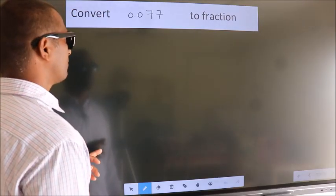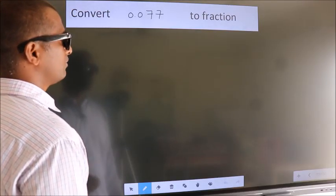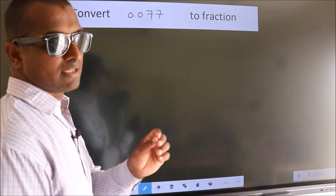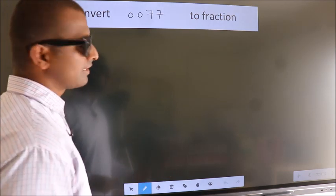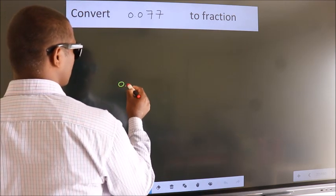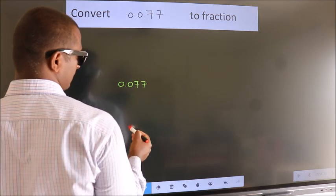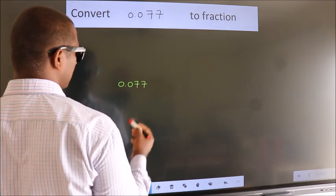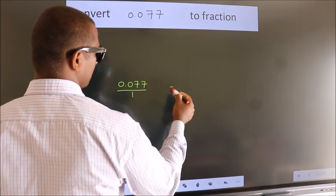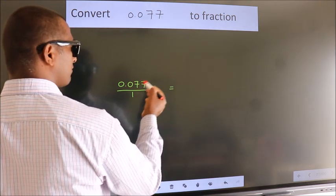Convert 0.077 to a fraction. Given is 0.077, we now take it as over 1. To convert this to a fraction,